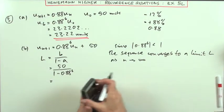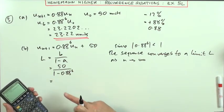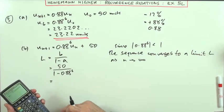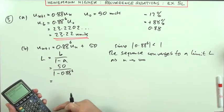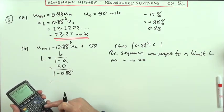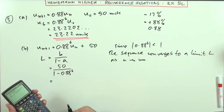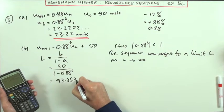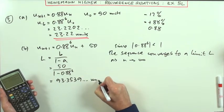50 over 1 minus 0.88 to the power 6. And I can just do that on my calculator with judicious use of brackets. So 50 divided by bracket 1 minus 0.88 to the power 6, close the bracket, then press equals. And I've got 93.3539 dot dot dot, etc, units.